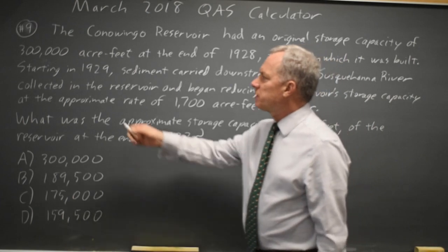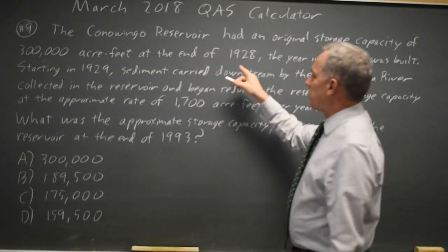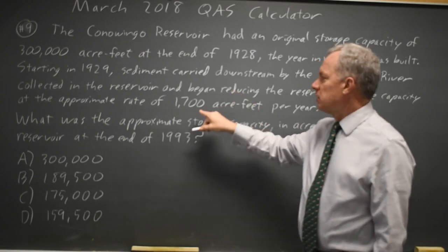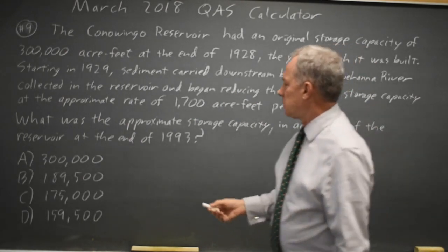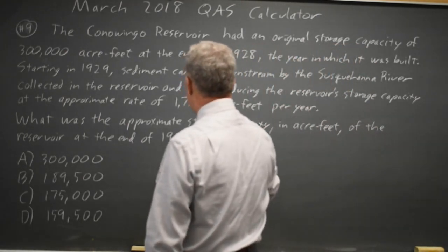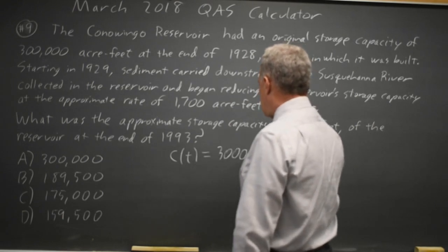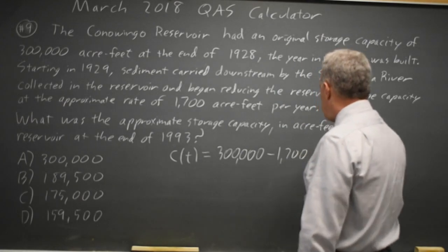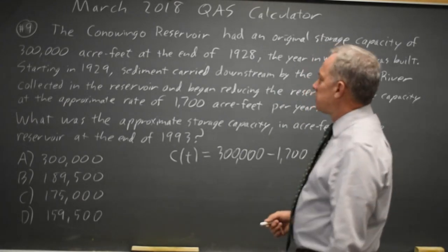It had a capacity of 300,000 acre-feet back in 1928, and capacity is reduced by 1,708 acre-feet per year thereafter. So, capacity after T years is 300,000 that you started with minus 1,700 times the number of years since 1928.